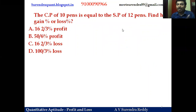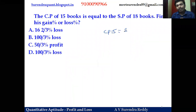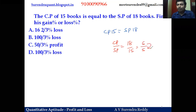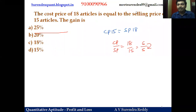Let's work out another question of this model. CP of 15 books is equal to SP of 18 books. Taking CP to SP ratio: 18 by 15 simplifies to 6 by 5 — the same as the previous question. So again, 1 rupee loss on 6 rupees cost price gives 16⅔ percent loss. Only the numbers changed but the ratio is in the same form.